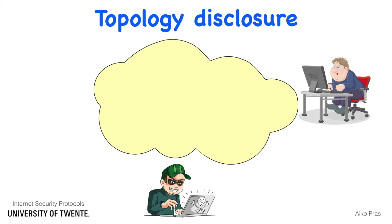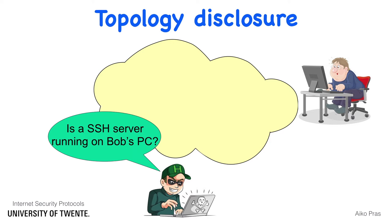Topology disclosure is an attack to discover how network devices are connected and which systems act as servers. For example, to determine if a secure shell server is running on Bob's system, the attacker will send some packets to check if a SSH server responds.